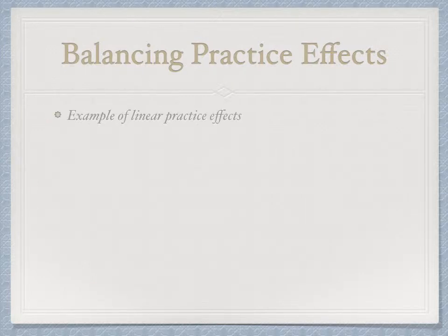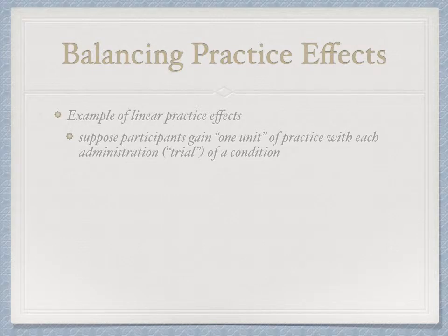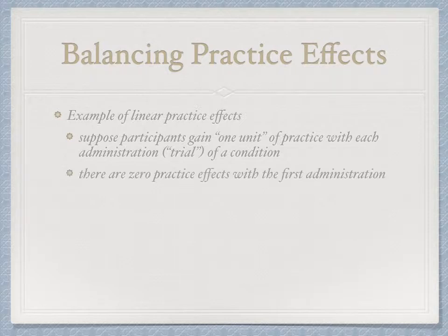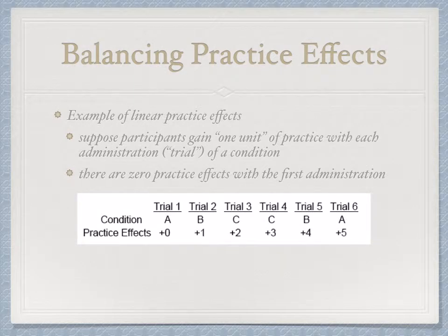For an example of linear practice effects with numbers: say they gain one unit of practice with each administration of a condition. So if there are no practice effects when we start the study and we add one each time, and we repeat all three conditions twice — an ABCCBA counterbalancing — we get a little bit better each time. With six trials, practice effects accumulate: 0, 1, 2, 3, 4, 5. But because we've counterbalanced the treatments, where A both starts and ends the study, and B and C are in the middle with equal spacing, these practice effects become balanced.